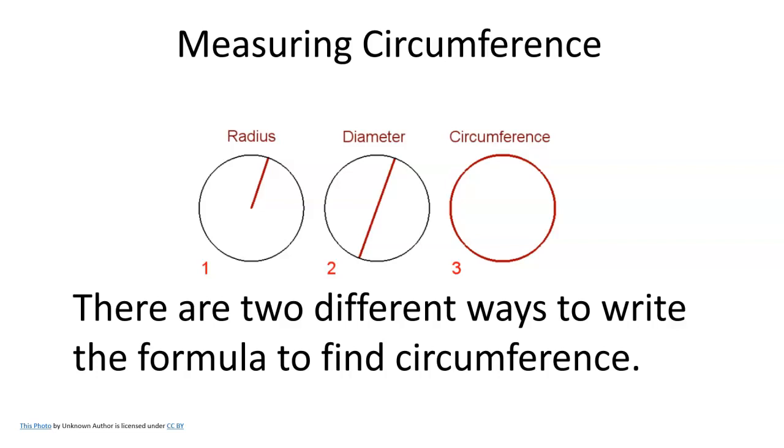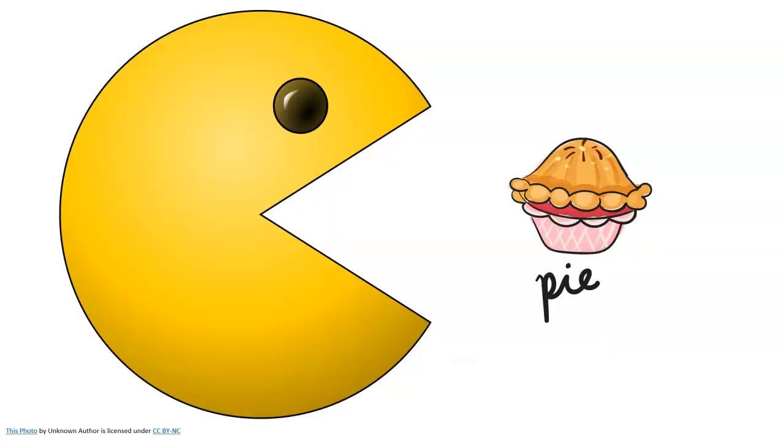There are two different ways to write the formula to find circumference and they both involve pi. One of the formulas might contain the radius while another contains the diameter, but either way, they both involve pi.